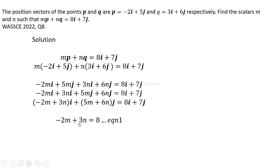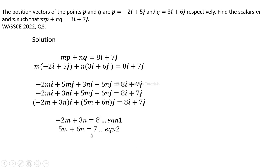Comparing the j-components gives us the second equation: 5m plus 6n equals 7. We now need to solve these two equations simultaneously. I'm going to multiply the first equation through by 2 so that I get 6n in both, allowing me to eliminate n.